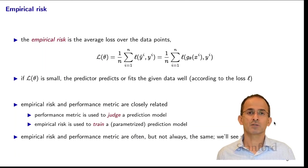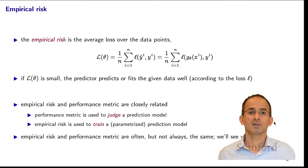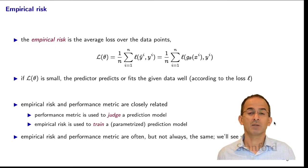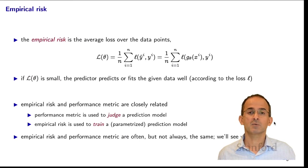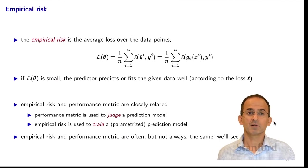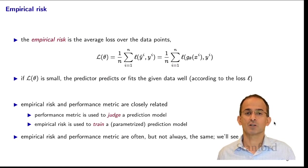We start with a loss function and use it to construct something called the empirical risk. The empirical risk is just the average loss over the data points. To compute it, we need data, a predictor, and a loss function. For each data point, we compute the loss between g_theta of x_i and y_i, then average that loss over all the data points. If the empirical risk is small, the predictor does a good job on average over all the data, according to the chosen loss function.